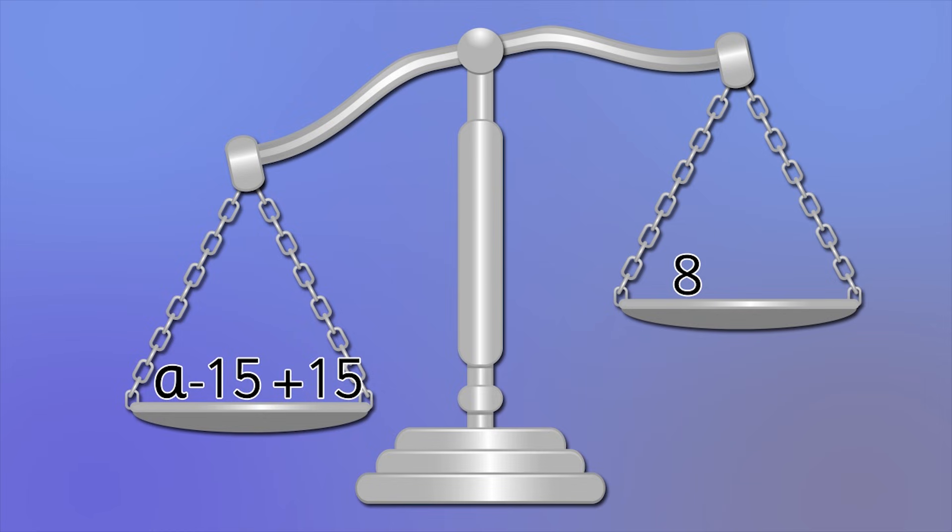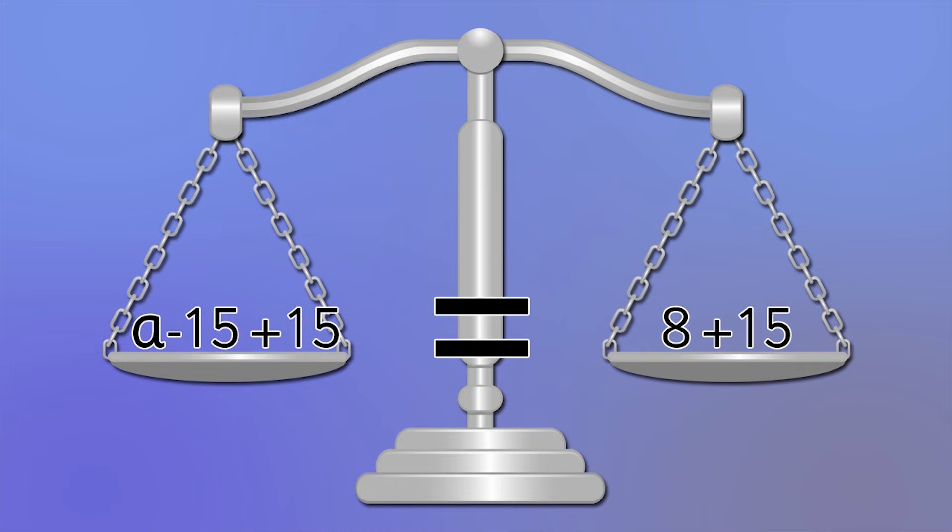For the scale to stay balanced, we have to do the same operation on both sides of the equal sign. That means we have to add 15 to this side of the scale too. Now the scale is balanced again.